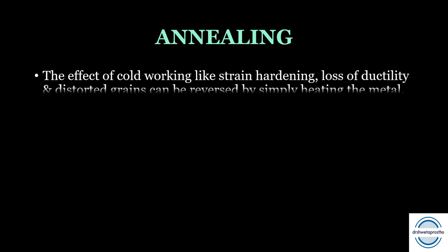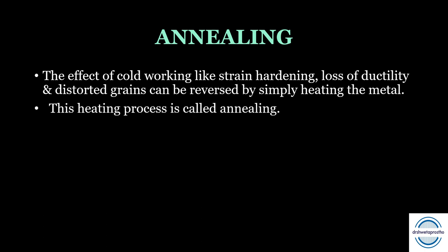A very important term to understand is annealing. The effects of cold working — such as strain hardening, loss of ductility, and distorted grains — can be reversed by simply heating the metal. This heating process is called annealing. It is done at a particular temperature and for a set time. The temperature is usually taken as half the melting point of the metal.